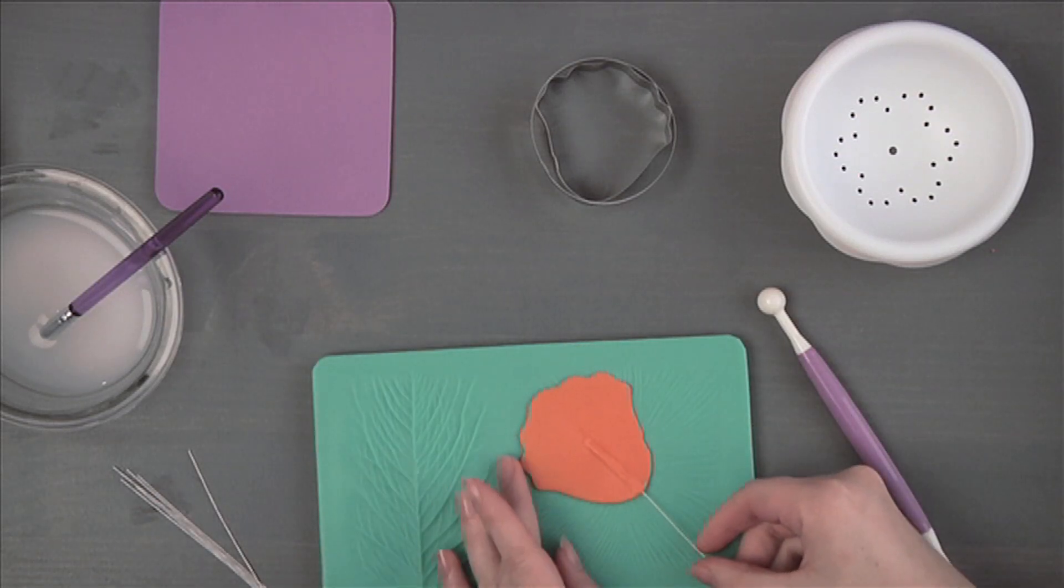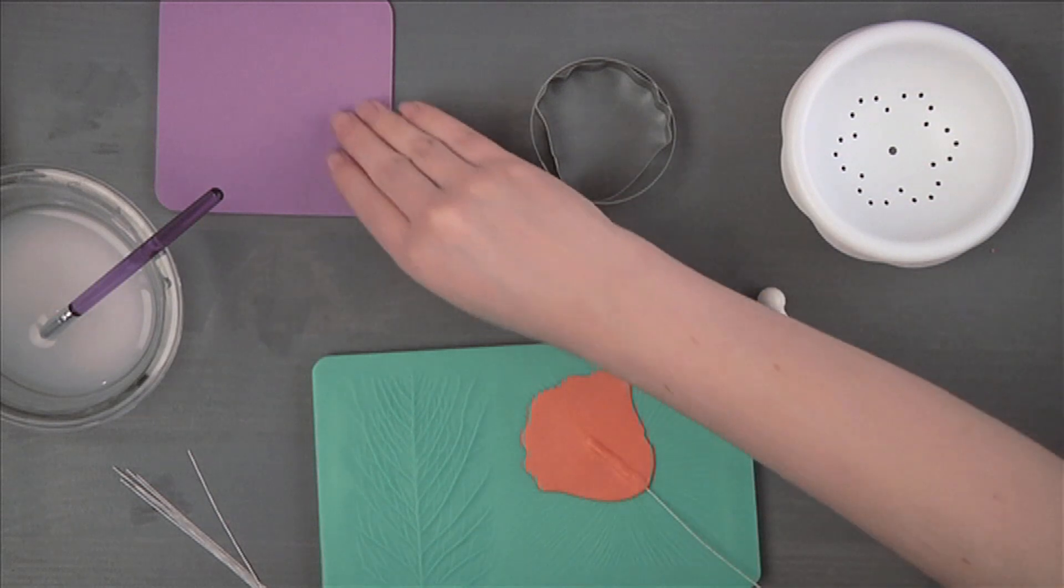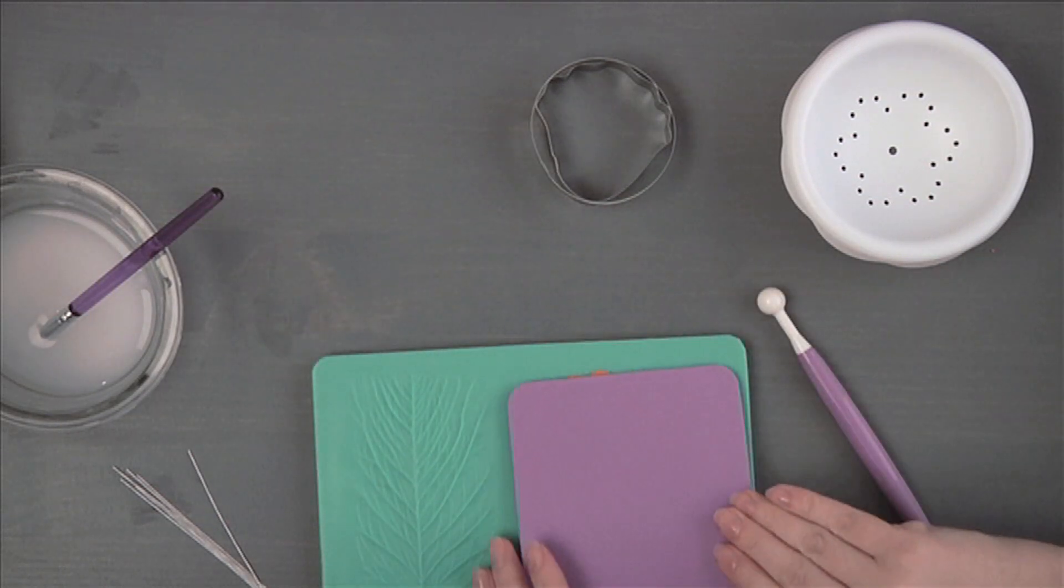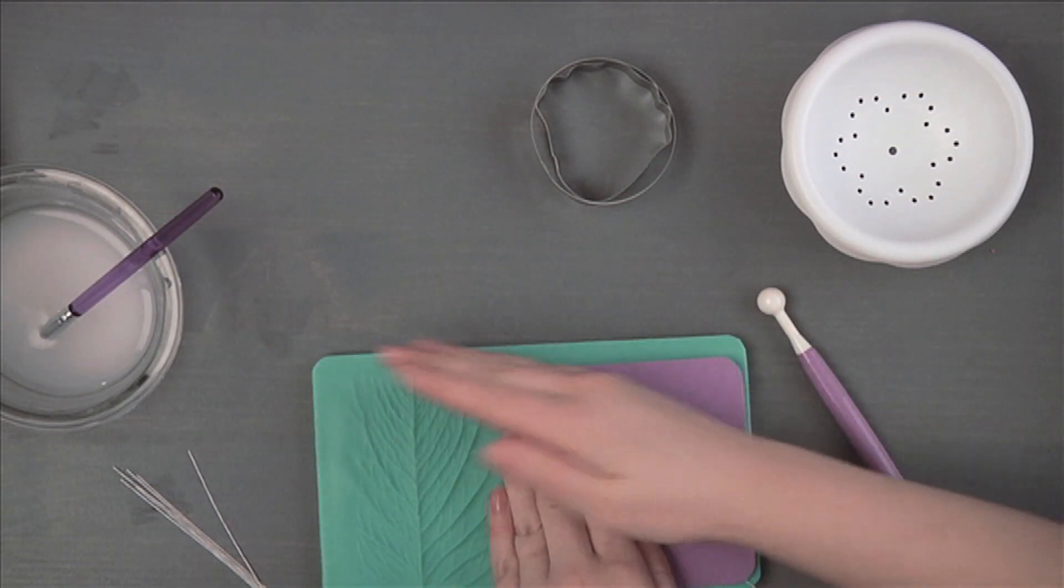Place the petal wire side up on a cornstarch dusted flower impression mat. Dust with cornstarch and press with thin foam to imprint the veins.